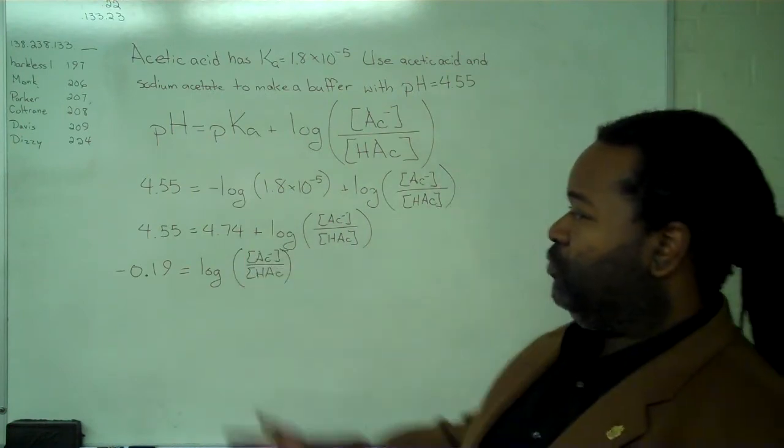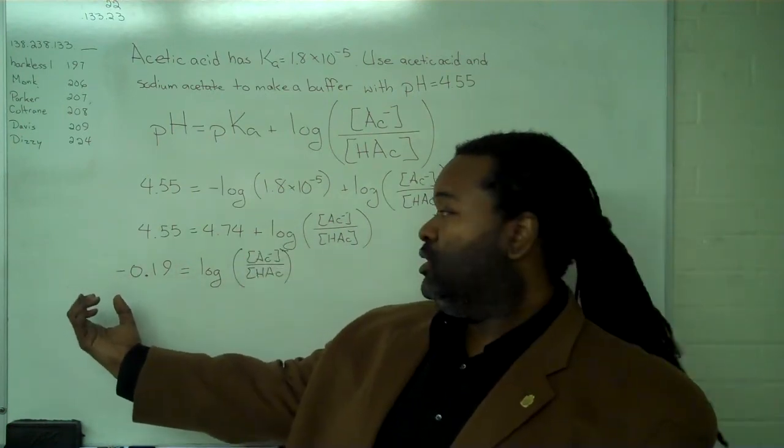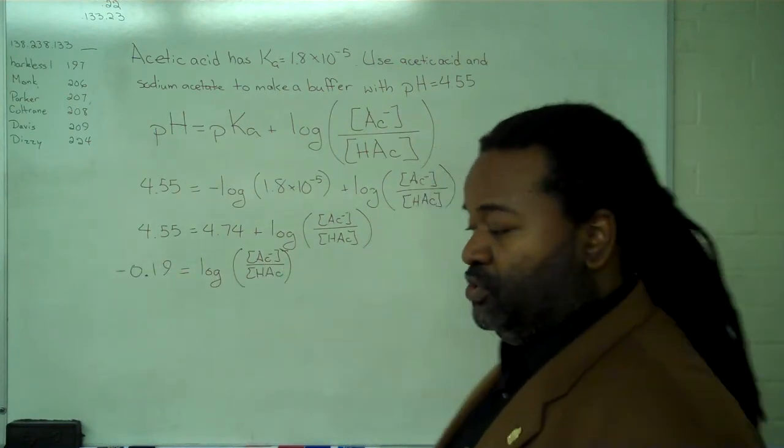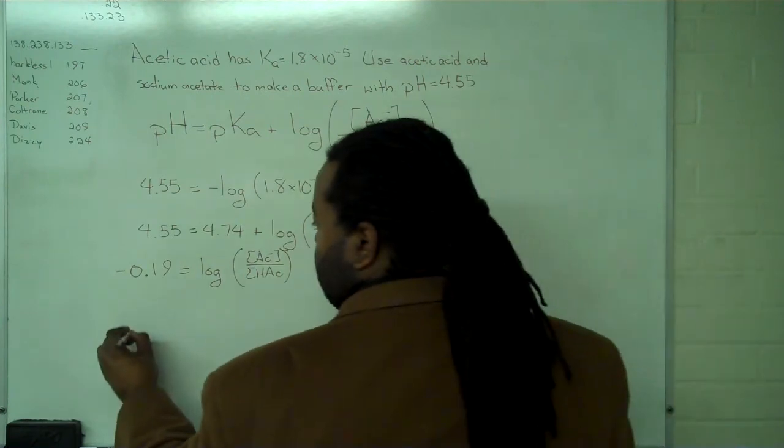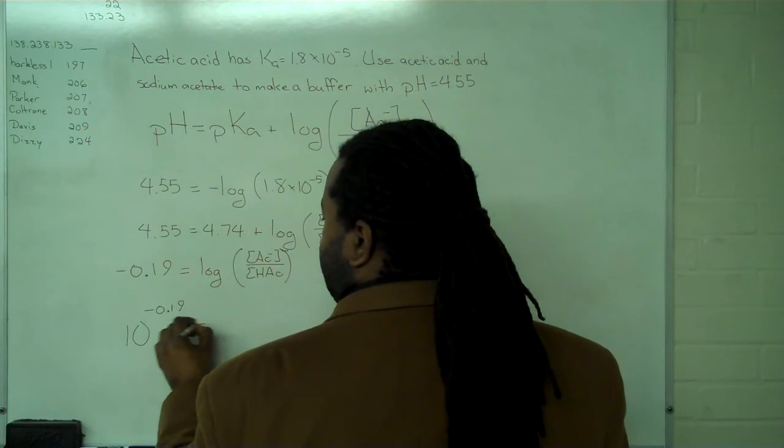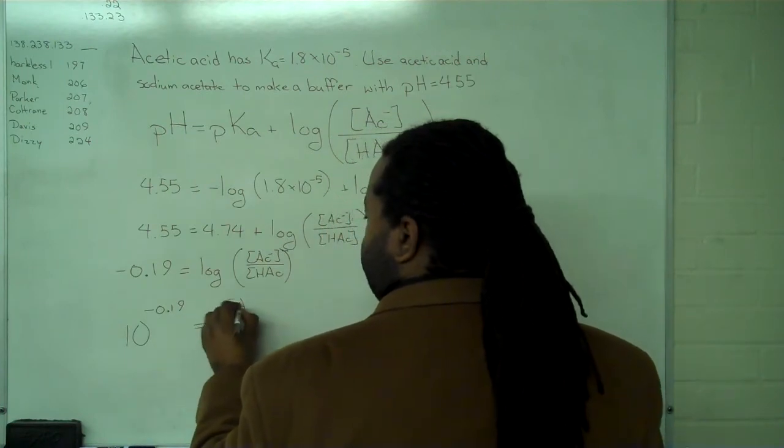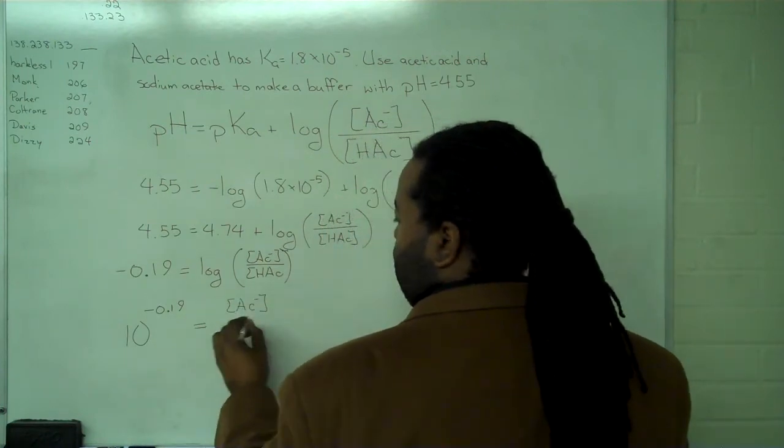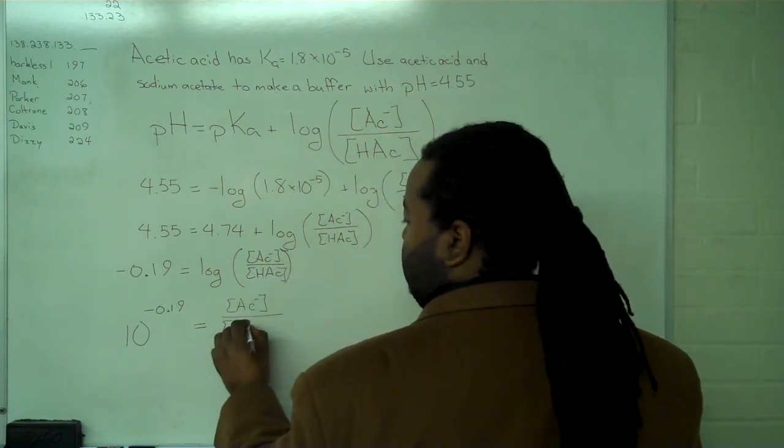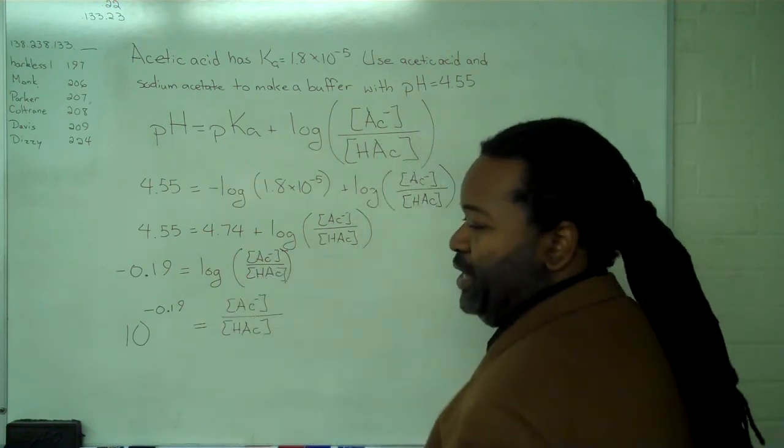If we take 10 to the minus 0.19 and 10 to the log of the ratio, we'll have the ratio itself. This gives us 10 to the minus 0.19 equals the ratio of acetate ion to undissociated acetic acid.